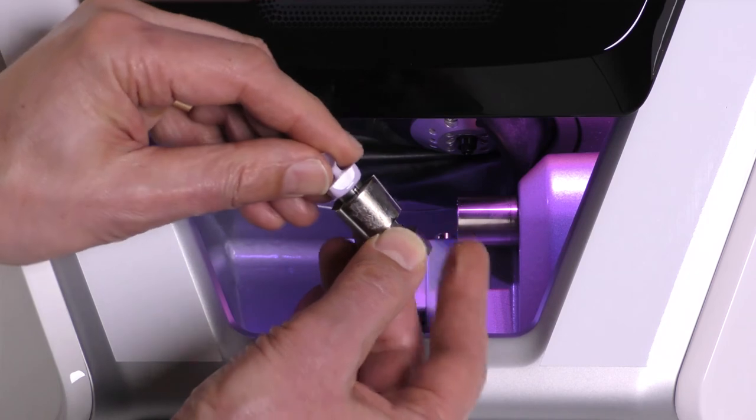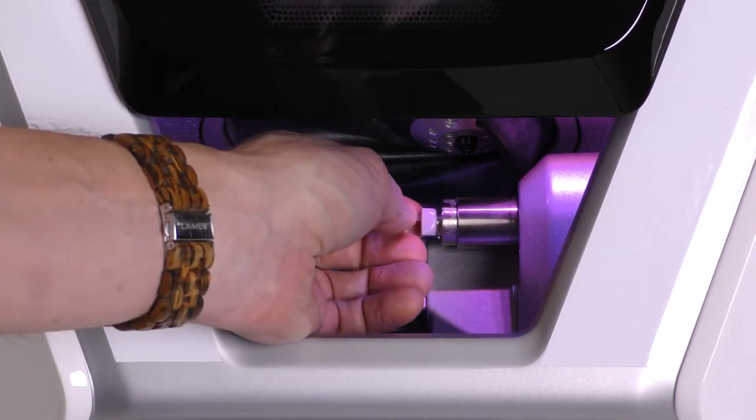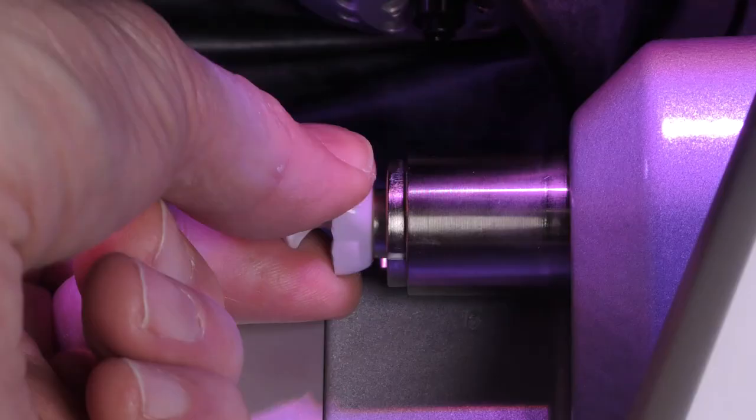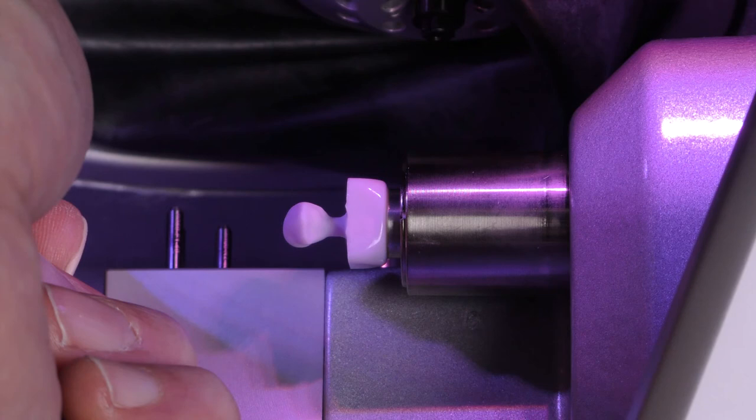Push the collet chuck with the fixing screw into the blank holder to the stop. Twist the collet chuck until it snaps in place and is properly mounted. Depending on the position you may need to twist it up to 360 degrees.